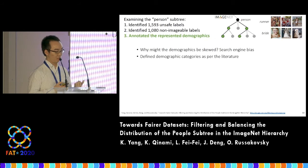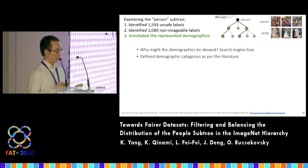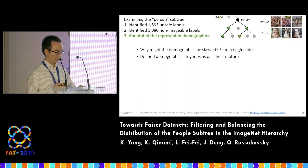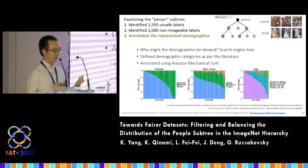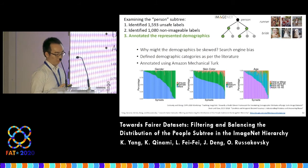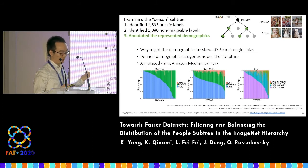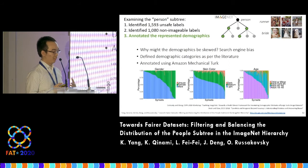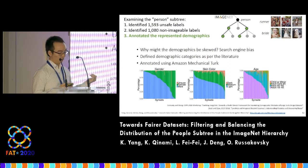This leads to our third constructive solution: we annotated demographics for images from all safe and imageable labels. We chose to annotate gender, skin color, and age. This figure shows the distribution across all annotated labels, providing a glimpse at the representation of different groups within the dataset and transparency into the dataset, similar to what many great works have done before.